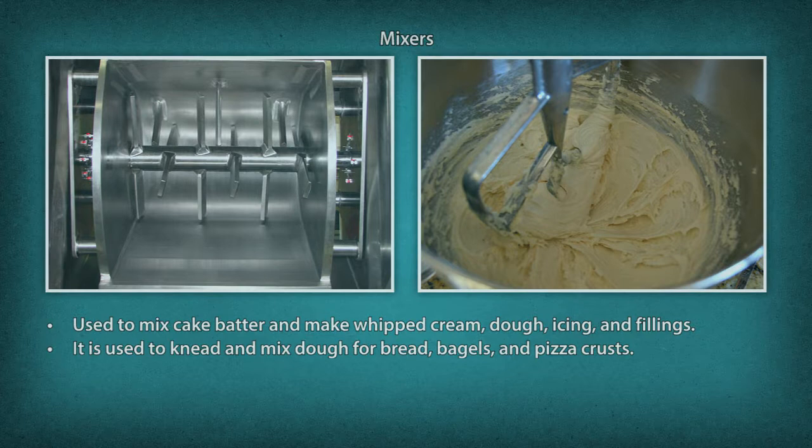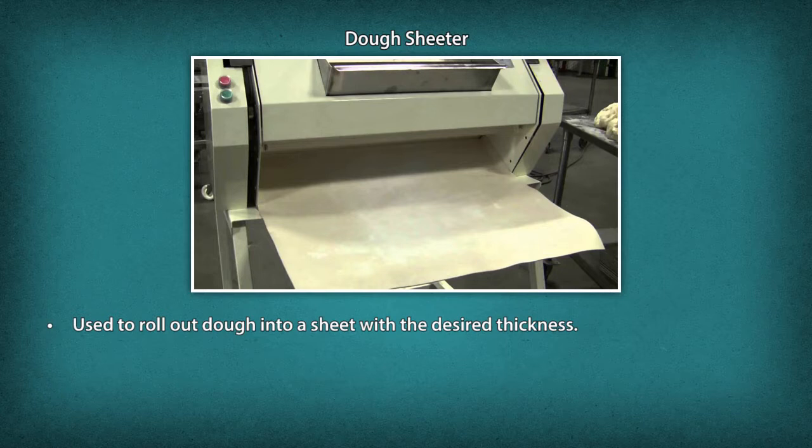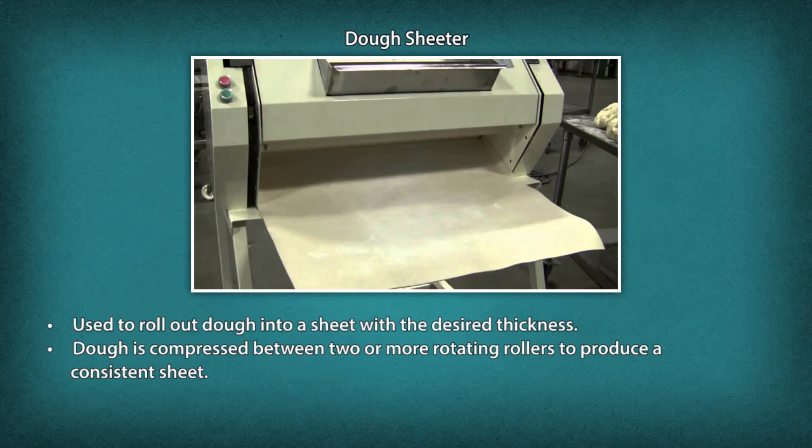Divider/Rounder: It is used to divide dough into equal proportions. This motor-driven machine is usually used for bread dough. Dough Sheeter: It is used to roll out dough into a consistent sheet with the desired thickness. Dough is compressed between two or more rotating rollers to produce a consistent sheet. This equipment is used especially for pastries and biscuits.